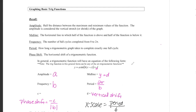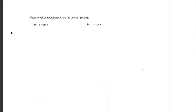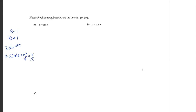Let's use all of this information to graph just our basic sine and cosine curves. First, let's graph y equals sine x. For y equals sine x, a is one and b is one — the number in front of sine is one, and the number in front of x is one. The period is two pi over b, so that's just two pi. My x-scale is the period over four, so two pi over four, which is pi over two. There's no phase shift — I'm not adding or subtracting anything to x — and there's no vertical shift.